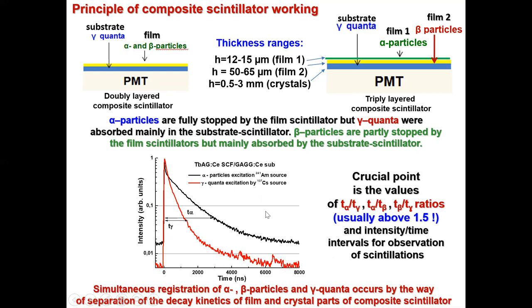It would be ideal if the respective ratios — T_alpha/T_gamma, T_alpha/T_beta, and T_beta/T_gamma — are as large as possible for the chosen type of composite. Usually such ratios must be above 1.5 for time discrimination of signals from different parts of the composite scintillator.